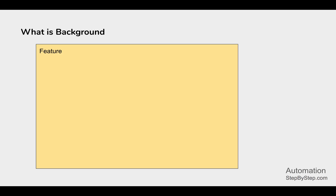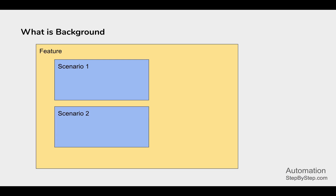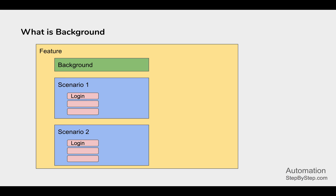Let's start with what is background. In Cucumber BDD, we have feature files and a feature can have multiple scenarios. Let's say we have scenario one and scenario two. In these scenarios, we can have multiple steps — given, when, and then steps. Now let's take a very common scenario where each scenario will have some common steps. For example, login is a common step in both scenarios. The user first has to log in and then perform the rest of the actions on the website. We can put this login step in a common section called background.